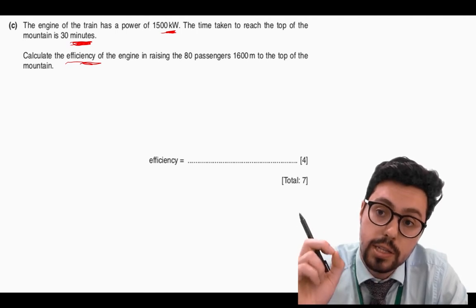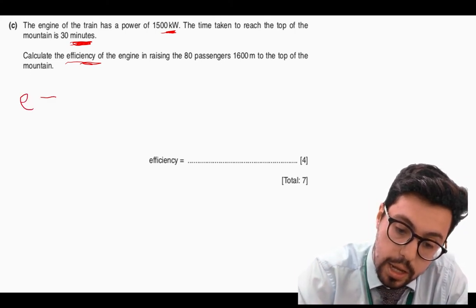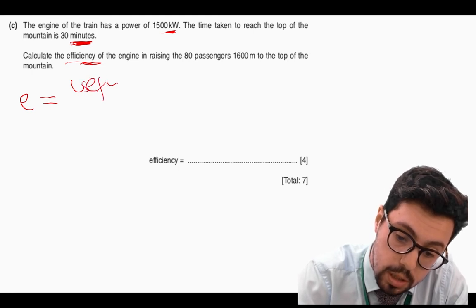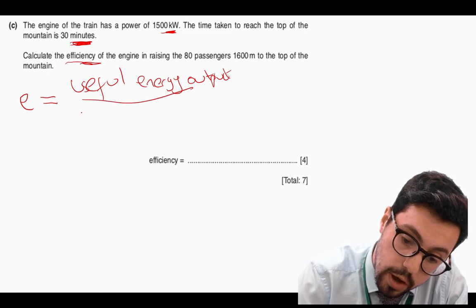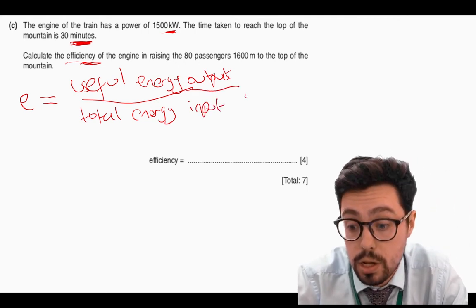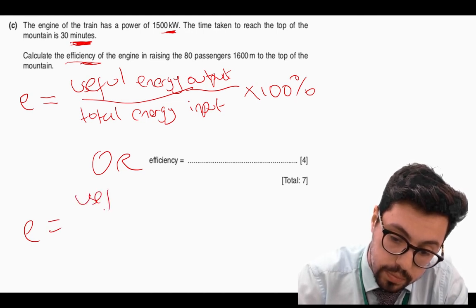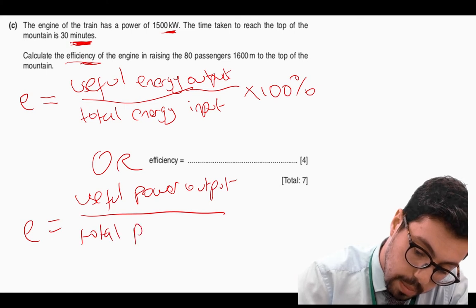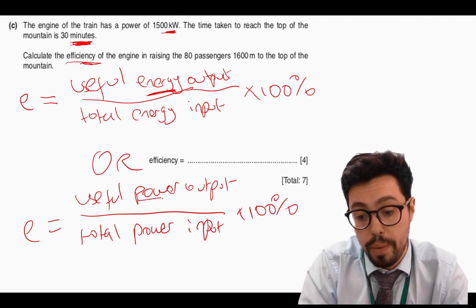It's a calculation question. The first thing I must do is write down the relevant equations. I'm trying to find efficiency. There are two equations for efficiency: energy output over total energy input, times 100%; or useful power output over total power input, times 100%. Make sure you write 'energy' or 'power' when you write out this equation, otherwise it's pretty much meaningless.